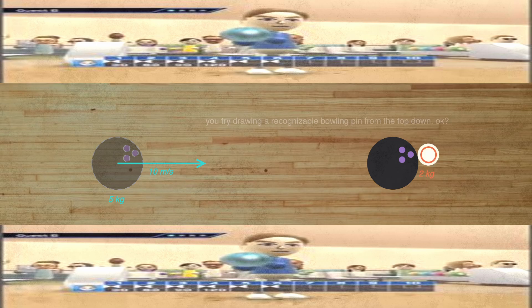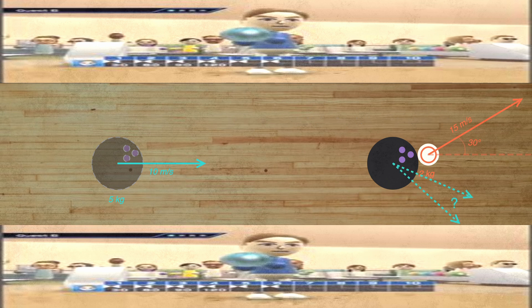Suppose we have a 5 kg bowling ball rolling down a lane at 10 meters per second. At the end of the lane, it hits a 2 kg bowling pin, which flies off at 15 meters per second at an angle of 30 degrees. What is the velocity of the bowling ball after this collision? Well, we haven't been told that the ball or the pin have broken, so we can assume that the mass of the ball and the pin stay the same before and after the collision.